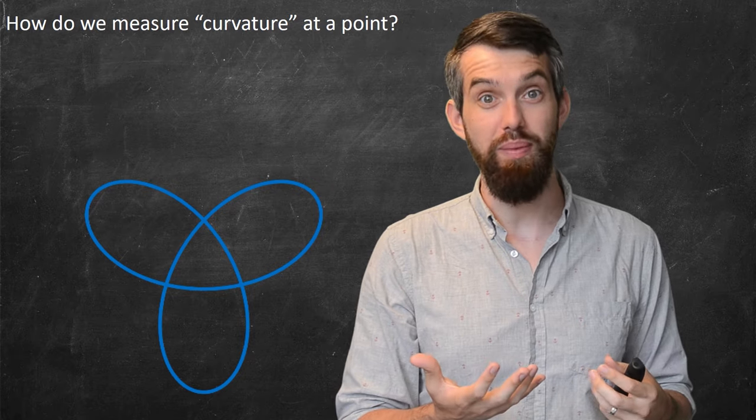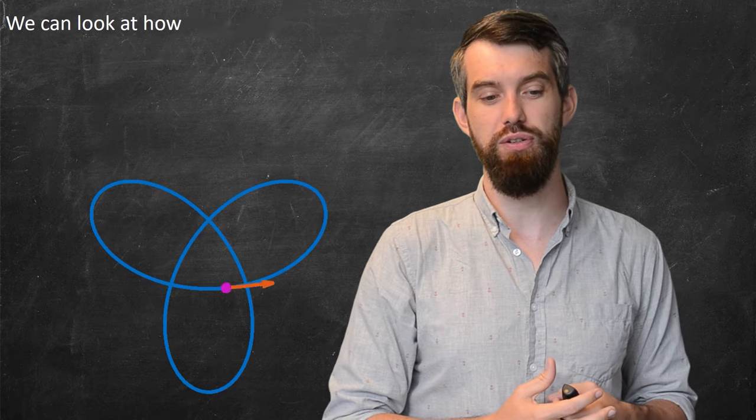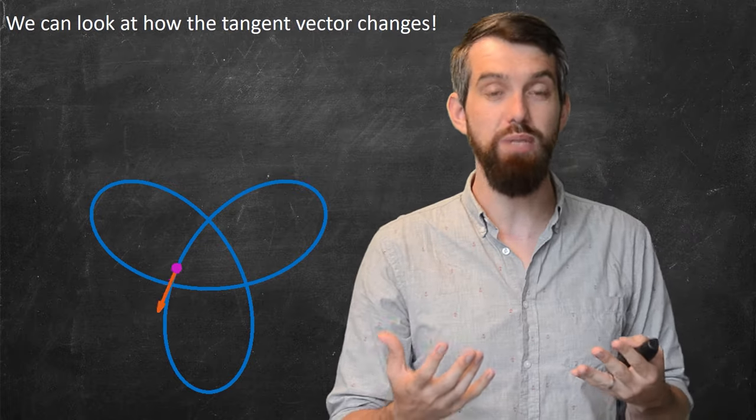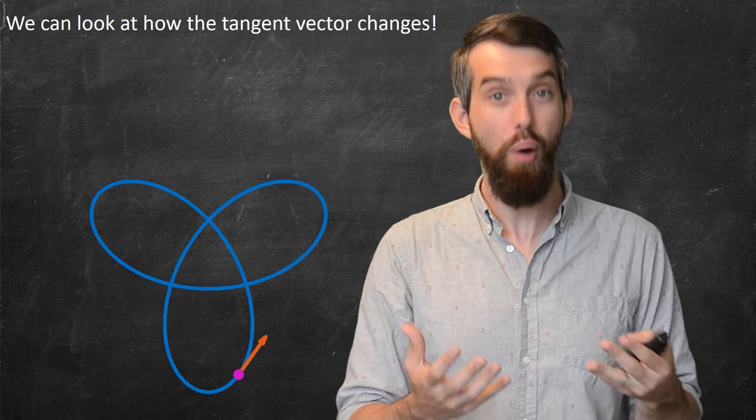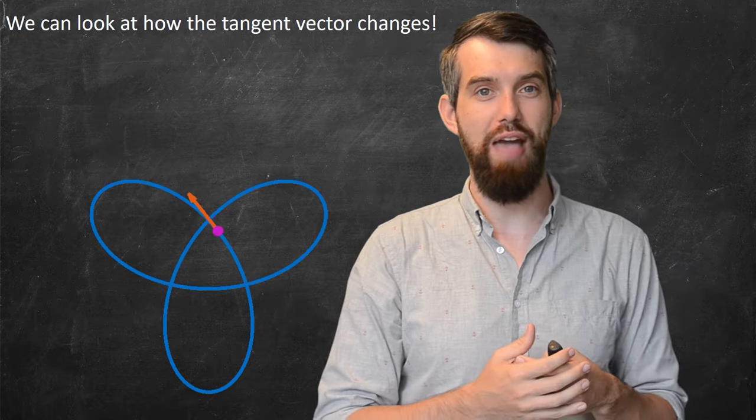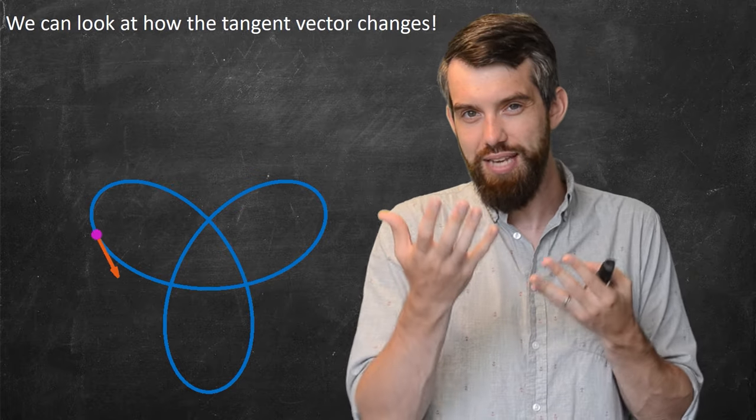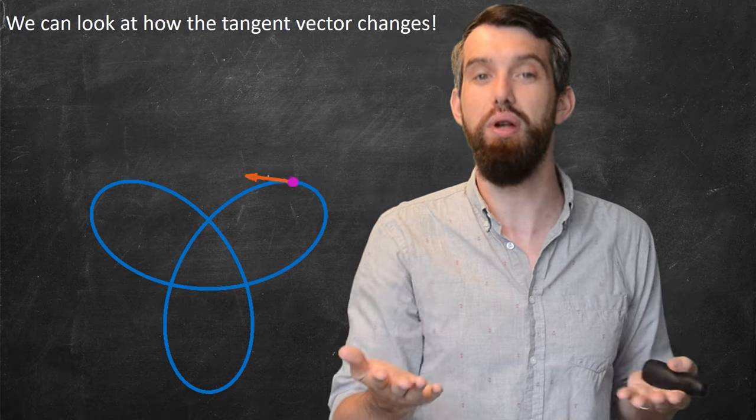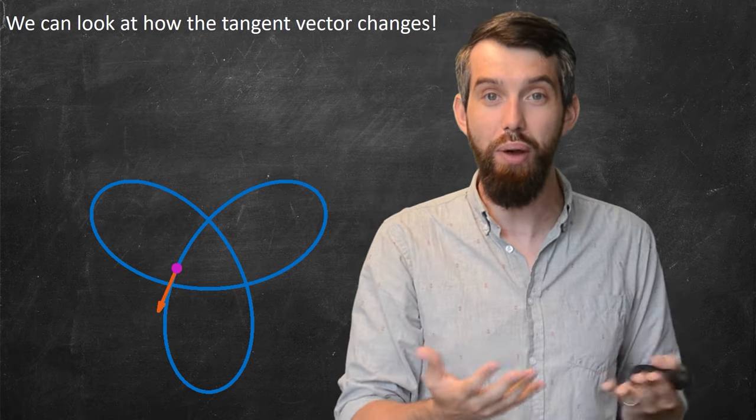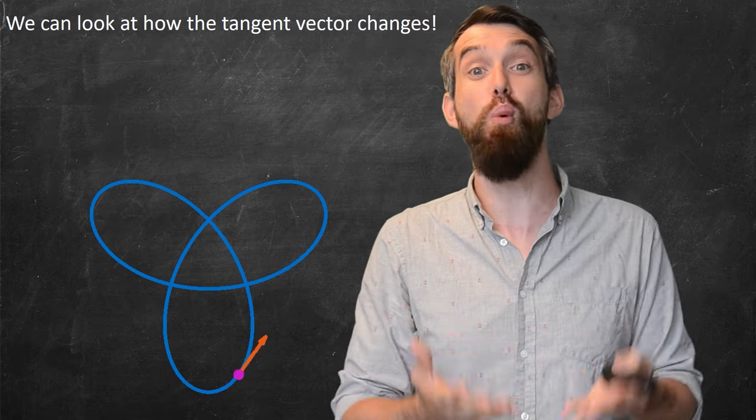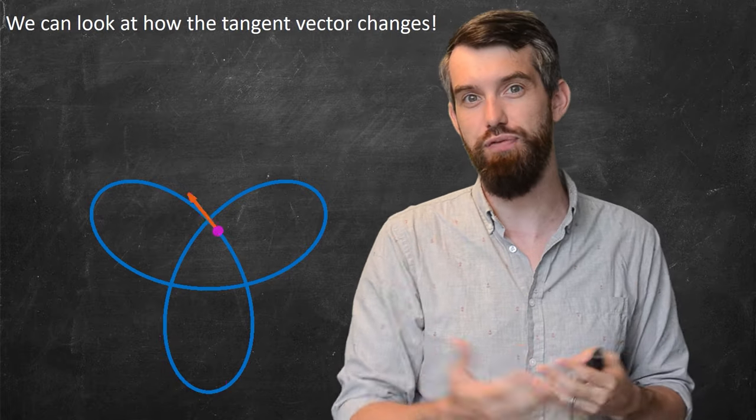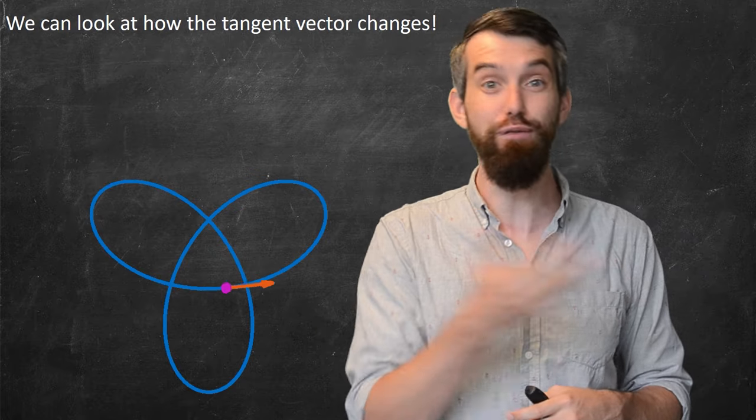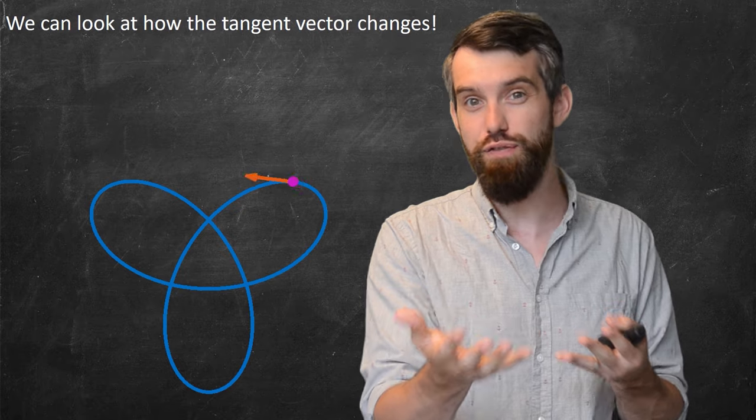One way I can approach this problem is by looking at tangent vectors. I have my curve parameterized by, say, arc length, and I'm going to have some point that's going to move around this curve as my arc length increases. The tangent vector points in the direction of which the point is going. At any particular point, the tangent vector directs where the point should go next. But notice as it goes around, the tangent vector is itself moving, and we can track how much the tangent vector moves.